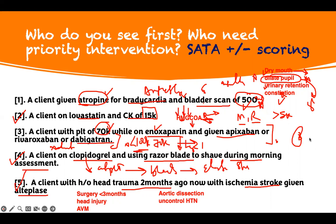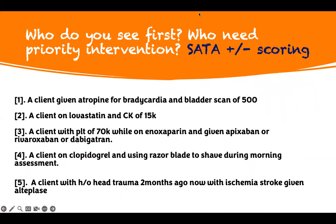If you pick more than three, you're going to get less than full credit. You want to get all three points. If you feel like you only know two answers, pick those two that you're confident about and you may get all of them right.